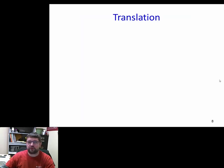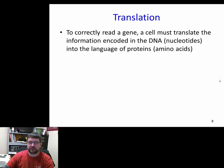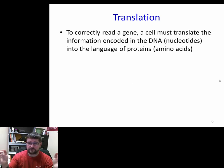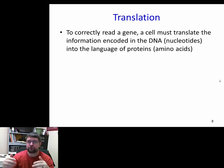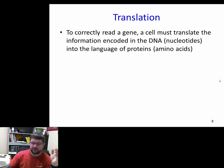Now we need to go from transcription into translation. The messenger RNA has been made off of the gene in the DNA, and then that messenger RNA has to be translated into amino acid chains. DNA is great for carrying information but it's not great for being able to translate that information — you have to rewrite the gene into RNA.